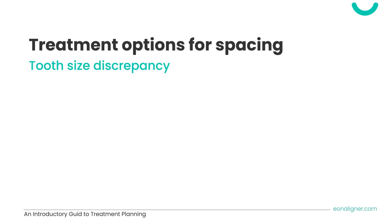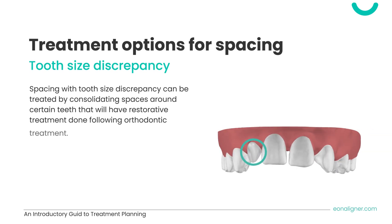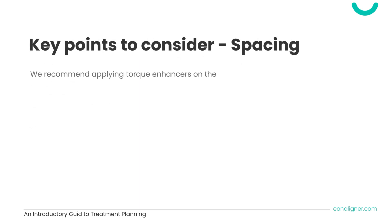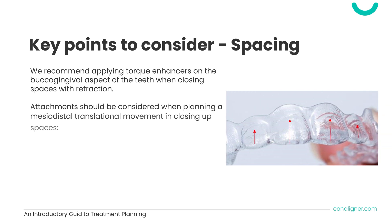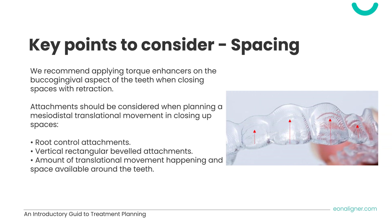In the presence of a tooth size discrepancy, for example peg-shaped lateral incisors, you can consider consolidating the spaces around the laterals for later restorative work. Some helpful key points: when retracting anterior teeth to reduce spaces, it is helpful to include torque enhancers under the buccogingival aspect. These are very important to preserve the inclination of those teeth. When moving teeth in a mesial or distal direction, considering attachments is important to increase the predictability of the movement.